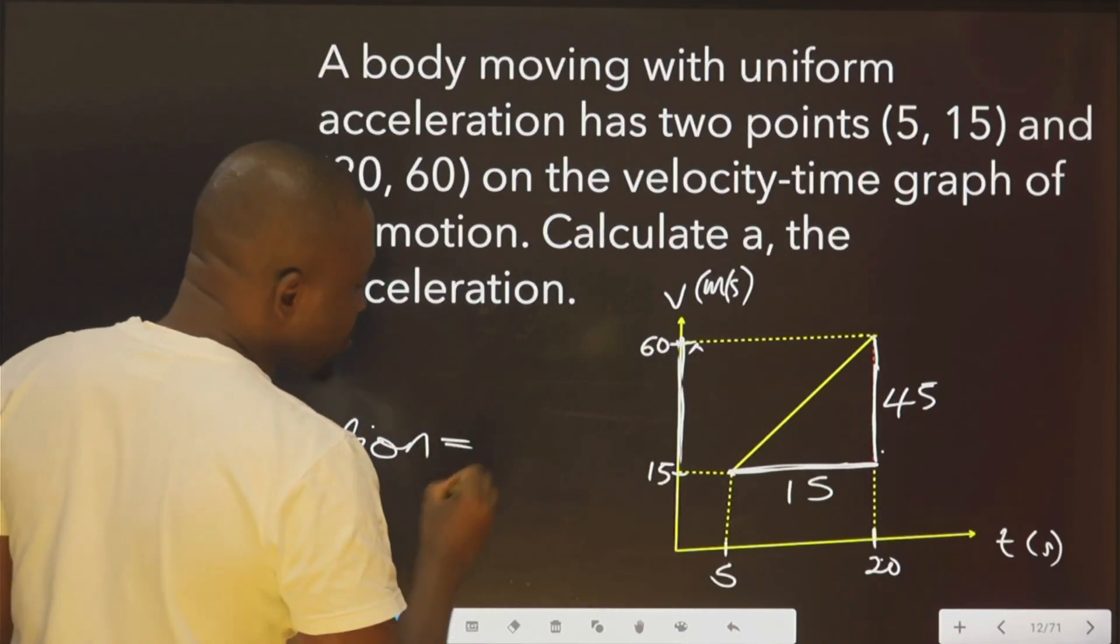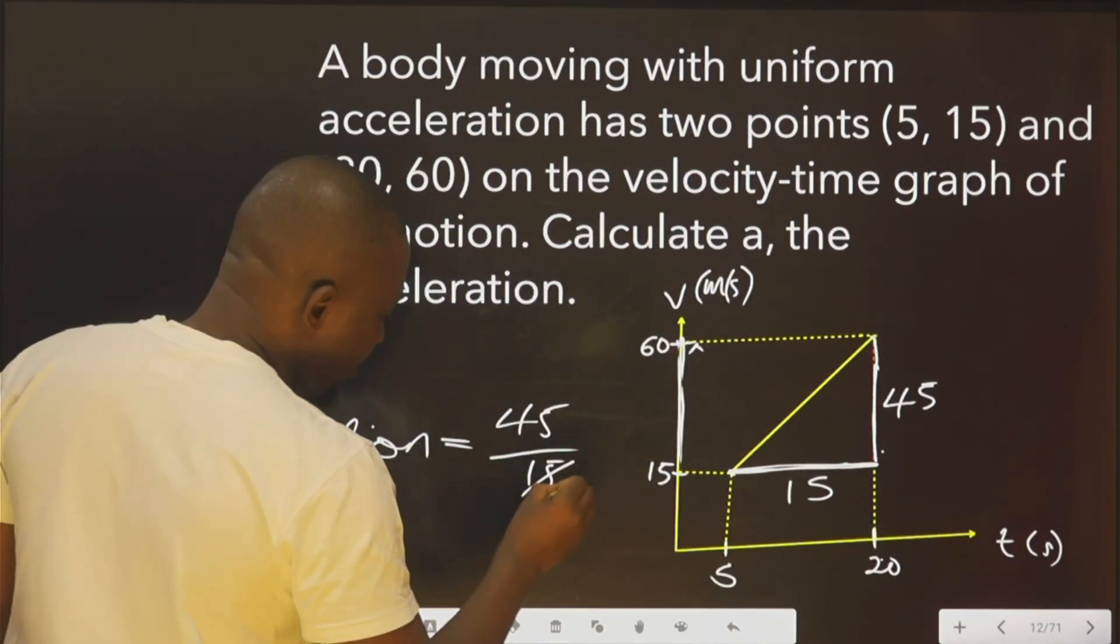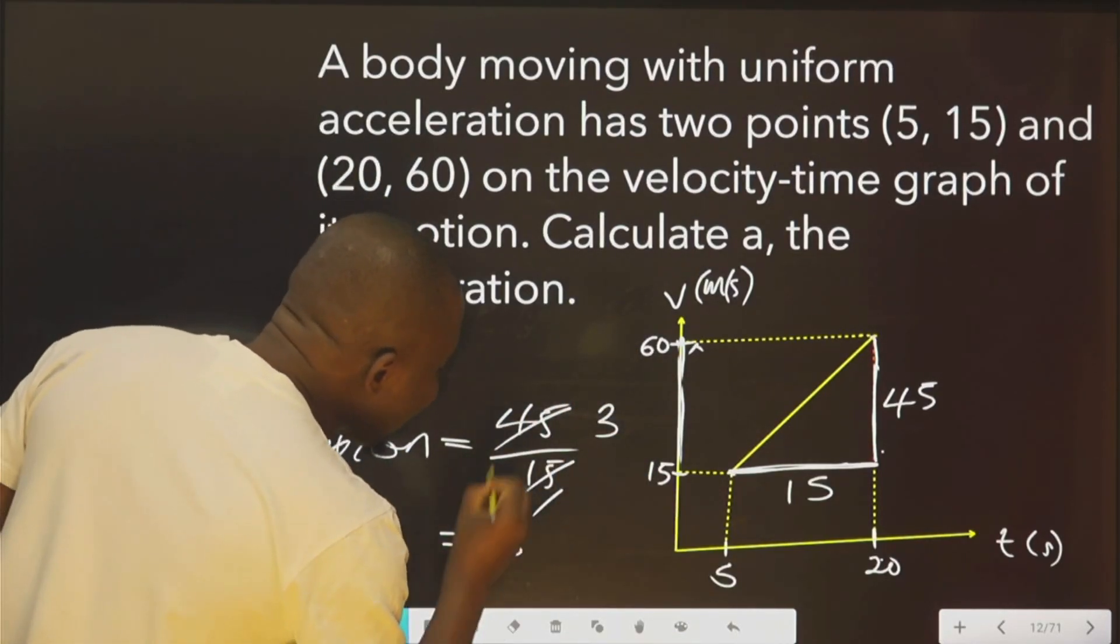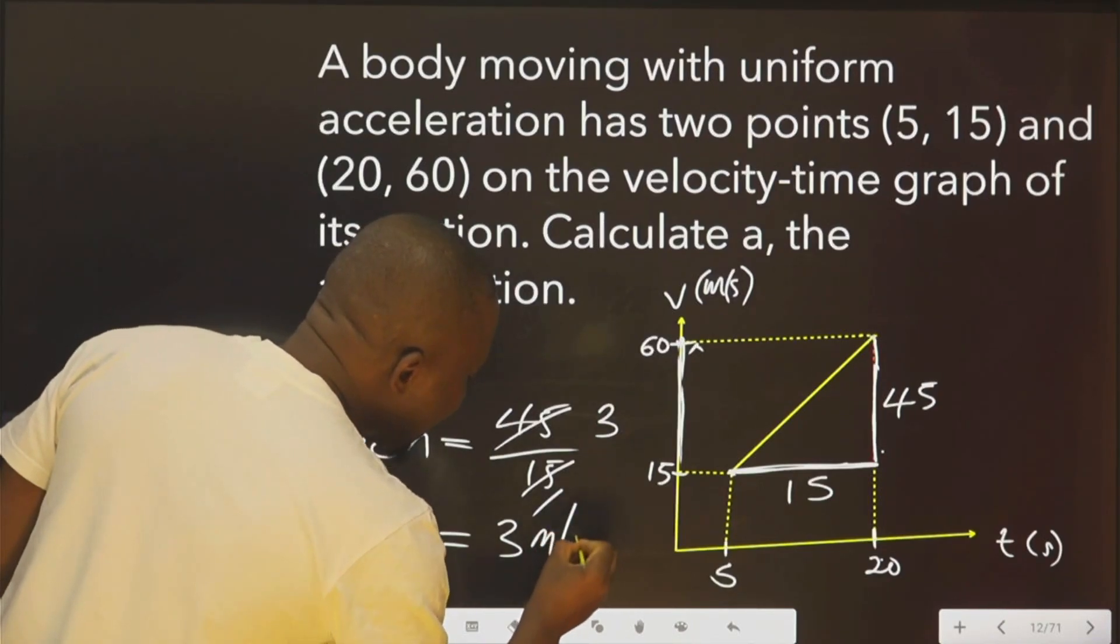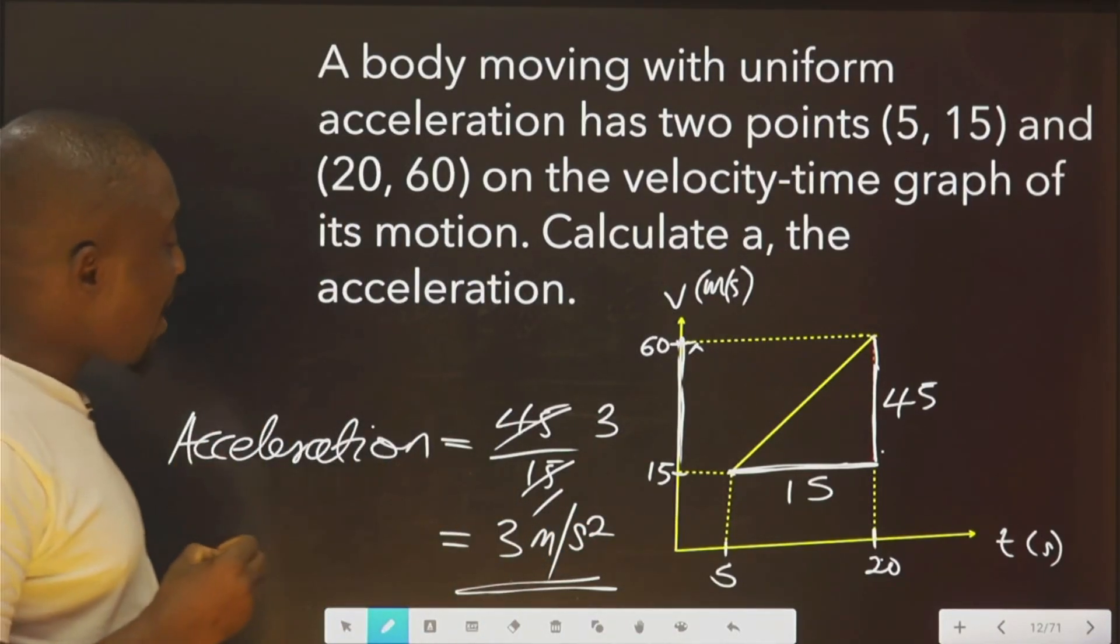3 equals to 3 meters per second squared. That is our acceleration A.